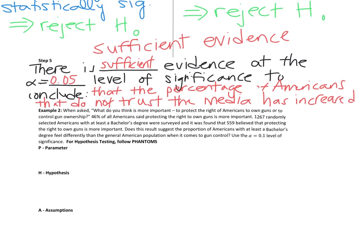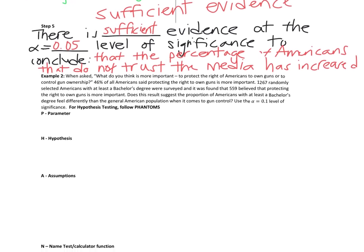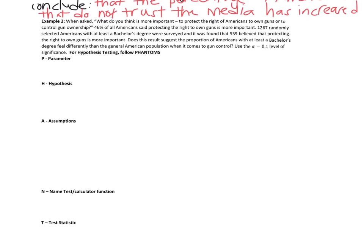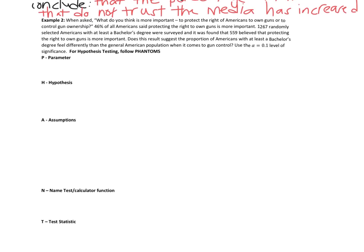For hypothesis testing, we're going to start using acronyms because this is a lot to remember. The acronym we're going to use is PHANTOMS. The second we see a level of significance being mentioned, we're going to follow PHANTOMS.